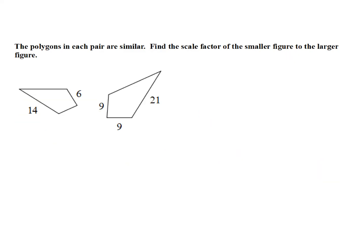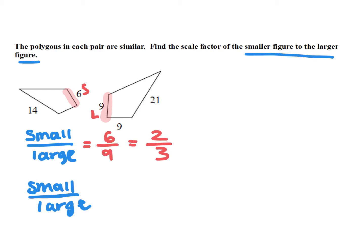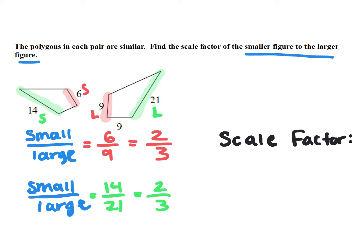In the next example, I'm again comparing the smaller figure to the larger. Using corresponding sides small to large: I can use side 6 over side 9, which simplifies to 2 over 3. Or I can use the other pair of corresponding sides: 14 over 21, which also becomes 2 over 3. Both give the same result, so the scale factor is 2 to 3.